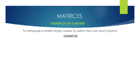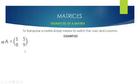Let's say we had matrix A. If we are asked to transpose this matrix, it simply means making rows into columns. Hence A transpose, or the transpose of A, will be this matrix. As you can see, our first row has become a column and our second row has also become a second column.